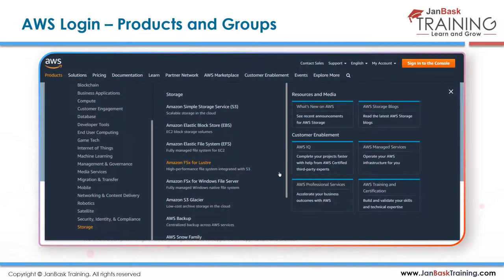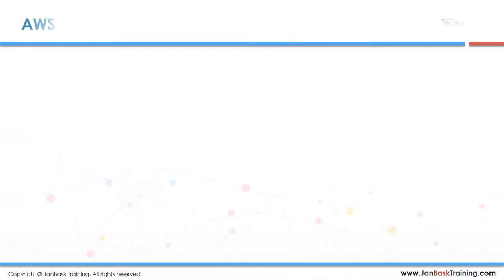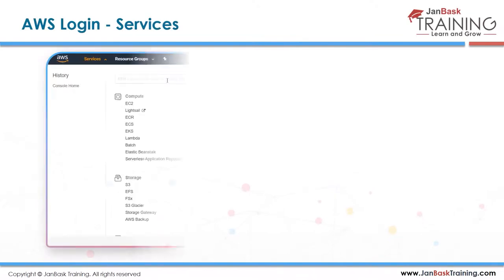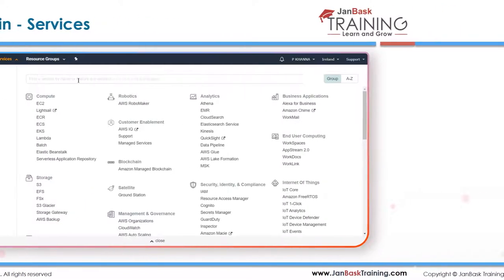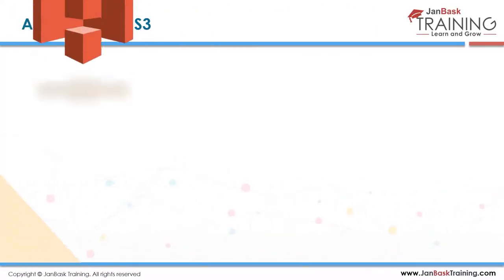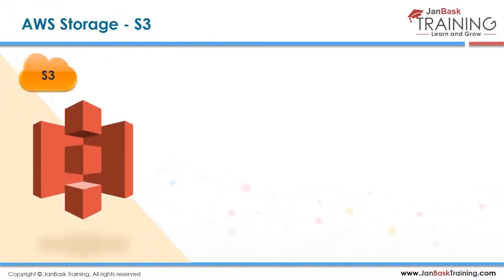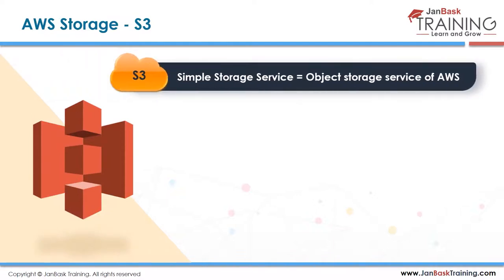On the AWS console under the storage tab, these are the storage products AWS offers. The first product is Simple Storage Service. S3 is object-based storage - meaning everything you store has an identity of its own.